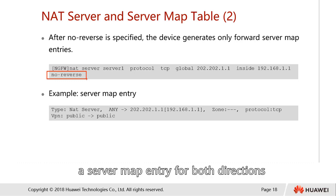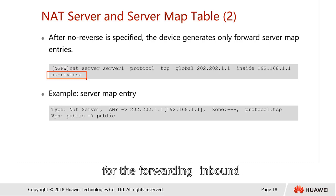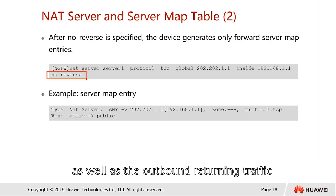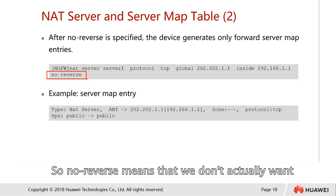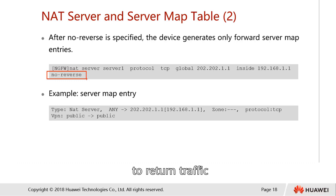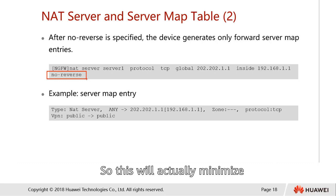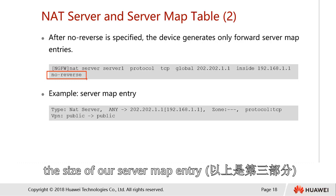NAT server will generate a server map entry for both directions — for forwarding inbound as well as outbound returning traffic. 'No reverse' means that we do not want the returning traffic to be part of our server map entry. This will minimize the size of our server map entry.